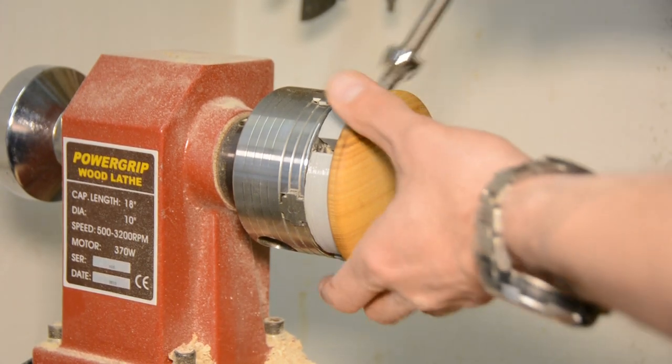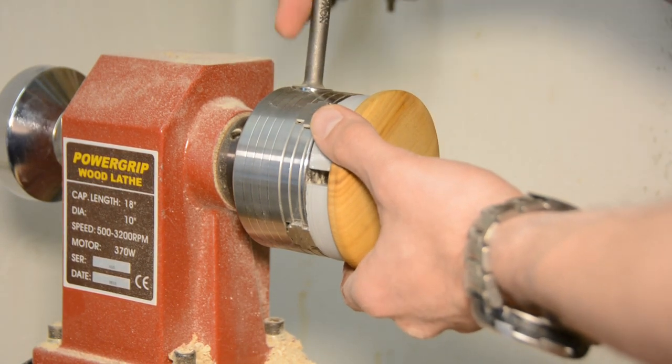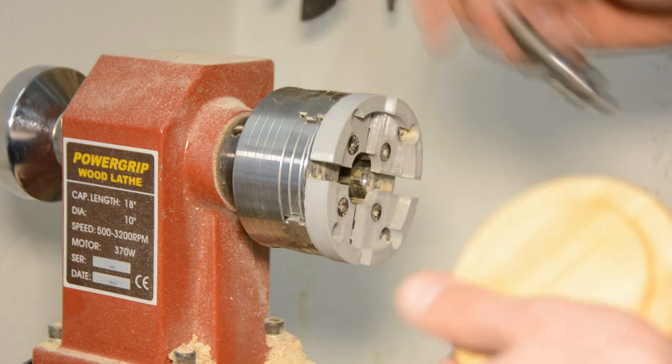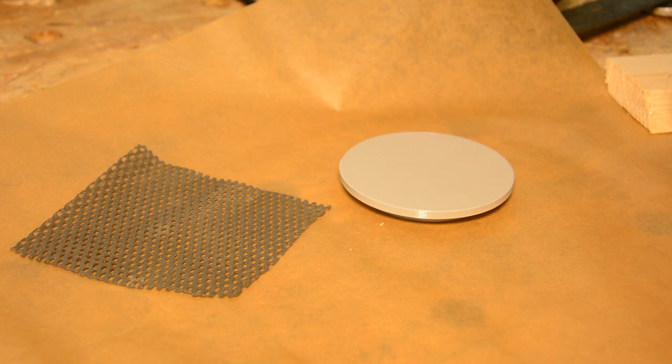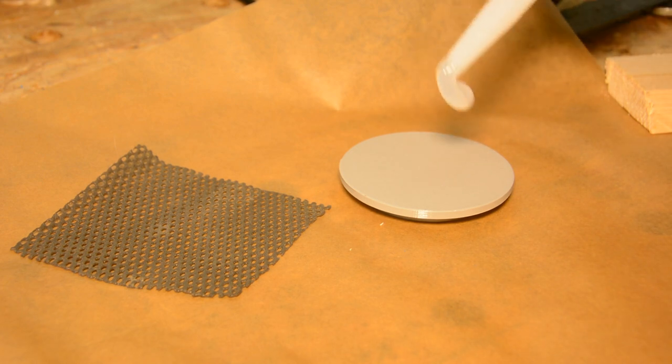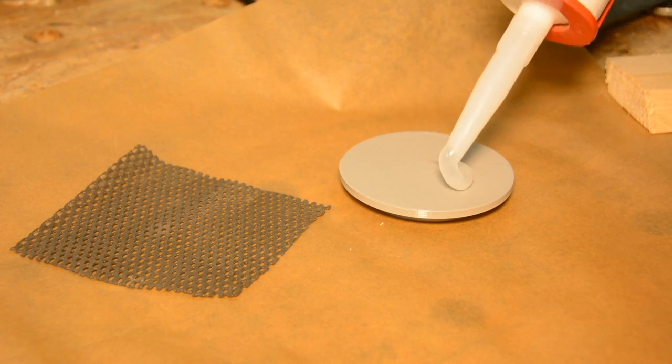While the oil on this lid is drying, let's look at an alternative method on how to create a lid without using the temporary tenon and hot glue. To do so we need this super simple disc that fits perfectly in the 3D printed jaws.